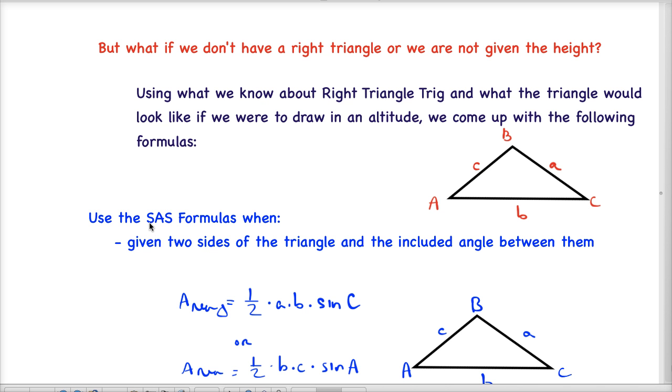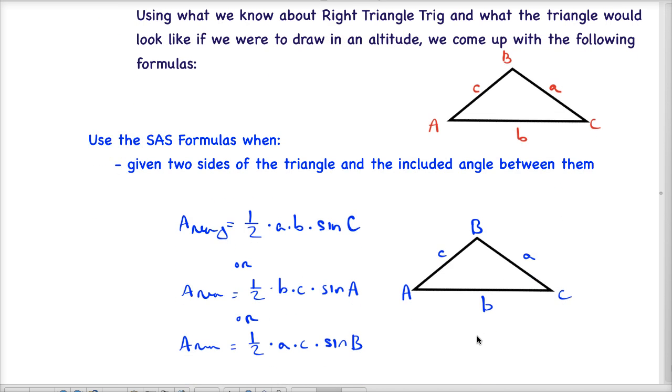This is called the side angle side formula. This is what we'll use when we're given the side, an angle, and another side. So we're not given the height, we don't have a height in this triangle, there's no altitude drawn in.